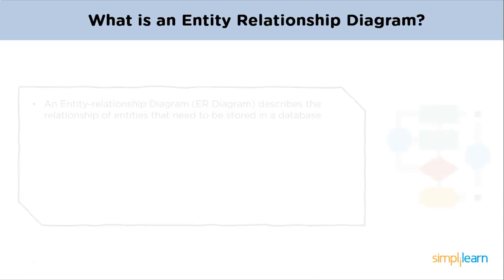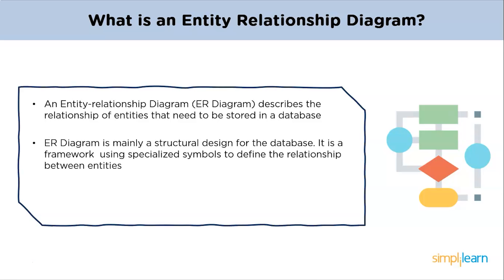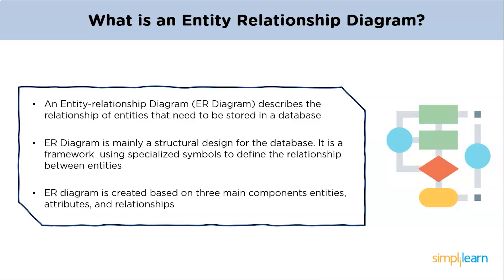An Entity Relationship Diagram describes the relationship of entities that need to be stored in a database. ER Diagram is mainly a structural design for the database — a framework made using specialized symbols to define the relationship between entities. ER Diagrams are created based on three main components: entities, attributes, and relationships.